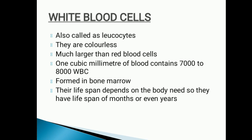Next we have white blood cells, also known as leukocytes. They are colorless and much larger compared to red blood cells. They are part of the immune system that defends against foreign invaders. Unlike RBCs, they are nucleated and are derived from multipotent stem cells.